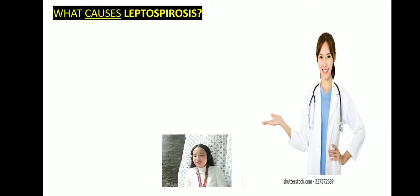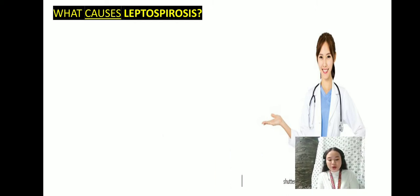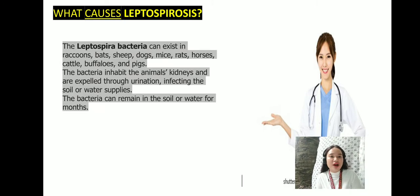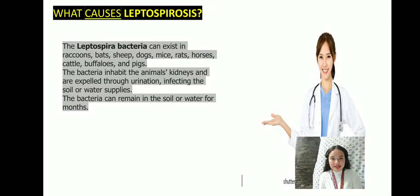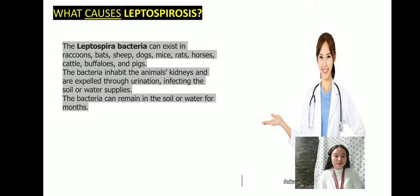Now let's proceed to the causes of leptospirosis. Leptospirosis can exist in raccoons, bats, sheep, dogs, mice, rats, horses, cattle, buffaloes, and pigs. The bacteria inhabit the animal's kidneys and are expelled through urination, infecting the soil or water supplies. The bacteria can remain in the soil or water for months. Leptospirosis is also caused by human activities like deforestation, rapid urbanization, poor sanitation, and increased incidence of typhoons brought about by climate change.